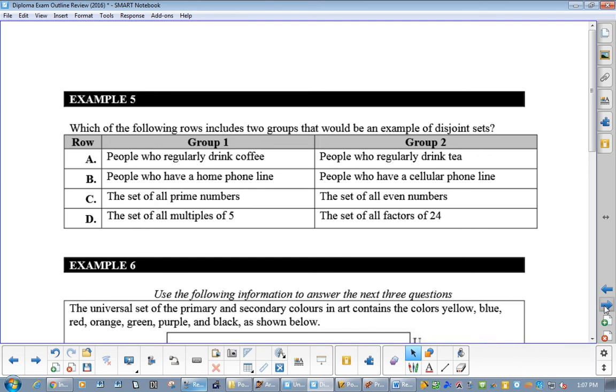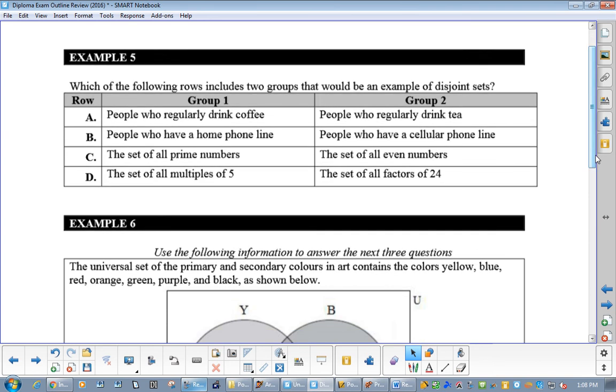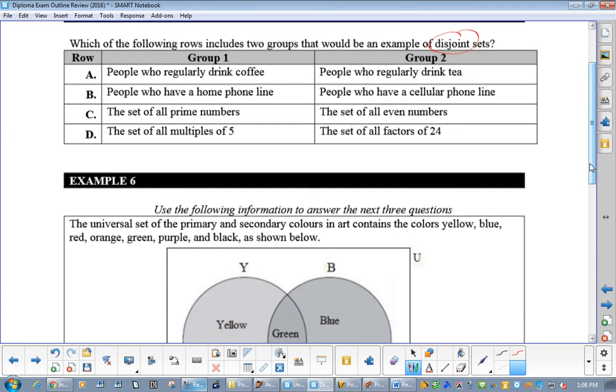Now, which of the following are disjoint? Here's a definite multiple choice. They'll ask you this because they want to know, do you even know what disjoint means? And it means that they do not have anything in common. So, people who drink coffee and tea. You have to ask yourself, can you drink coffee and tea? Yes.